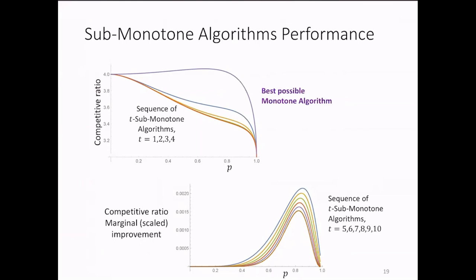Again, these results were obtained numerically. However, what we also proved formally is that, and this is something I did not show you in the slide, what we have proved is that even if we allow T to tend to infinity, the competitive ratio is nearly the orange curve you see at the top graph.